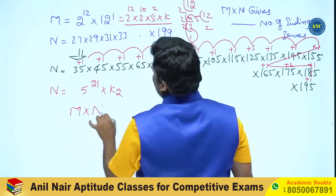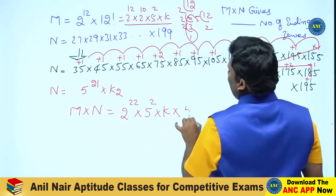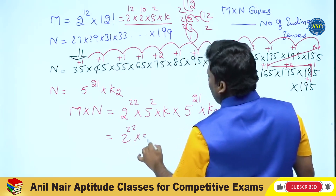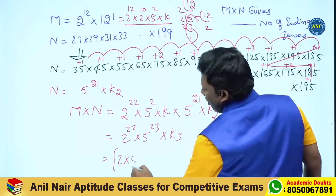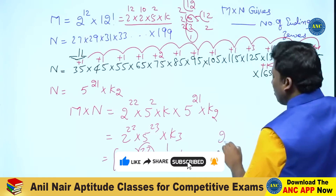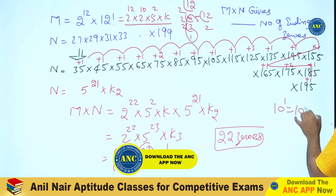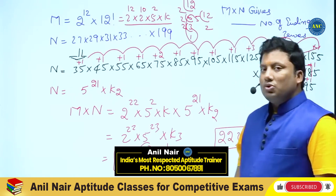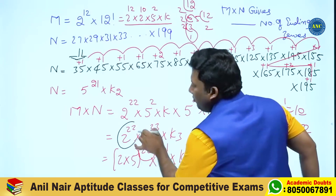So M into N equals 2 to the power 22 into 5 squared into K, times 5 to the power 21 into K2. This gives 2 to the power 22 into 5 to the power 23 into K3. This simplifies to (2 into 5) to the power 22 into K3, which is 10 to the power 22 into K3. So the number of trailing zeros is 22, coming from the lowest power — which here is the power of 2, not 5.